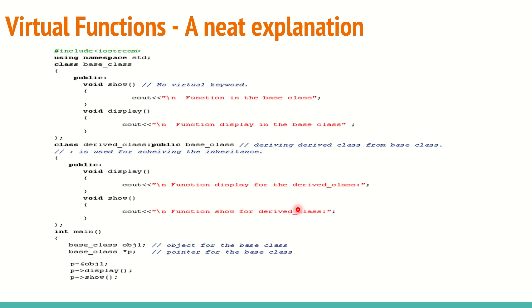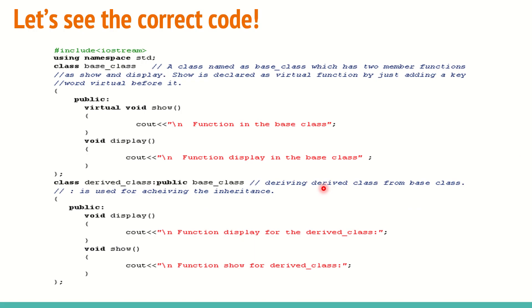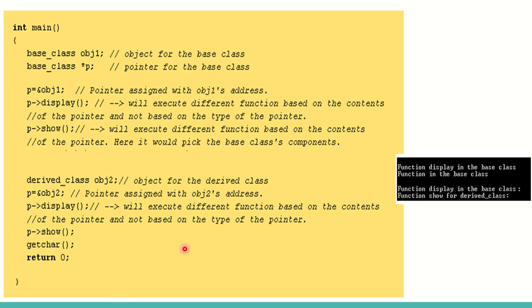However, it still calls only the base class functions for the derived object — this is because of early binding. The address binding happens at compile time; the compiler misinterprets that 'show' is always the base class version and doesn't realize it has been overridden in the derived class. To fix this, we use the keyword 'virtual' on the function in the base class.